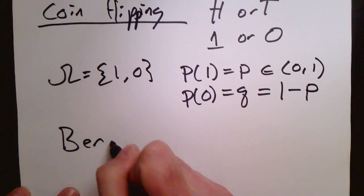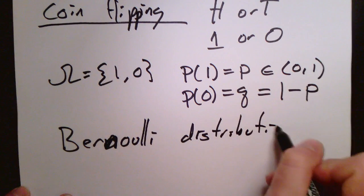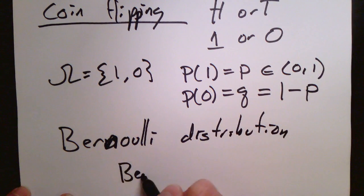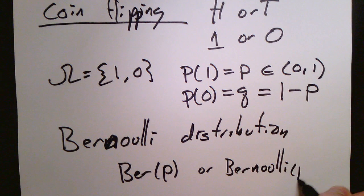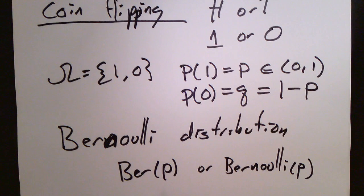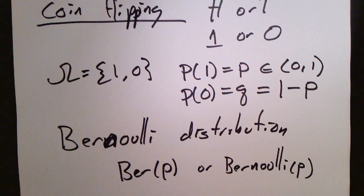Now, p is, of course, a number between 0 and 1. This is called the Bernoulli distribution. And it has a special name, named after one of the founding fathers of probability theory, Bernoulli. And we usually write Ber(p), or write out the entire thing, Bernoulli-p. So when we talk about a Bernoulli distribution, this is what we're talking about.